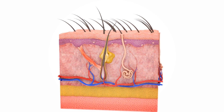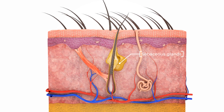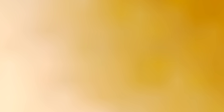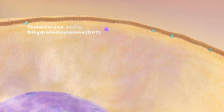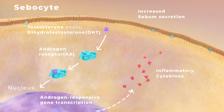Androgen receptors are expressed throughout the skin and are found in the sebaceous glands, sebocytes, and dermal papilla cells. Circulating and locally synthesized androgens such as testosterone and dihydrotestosterone (DHT), a derivative of testosterone, bind to AR in the sebaceous gland and stimulate sebaceous glands to produce and secrete sebum.